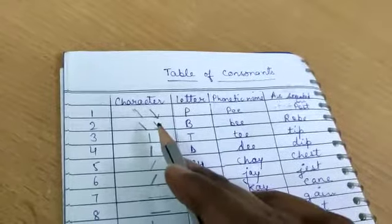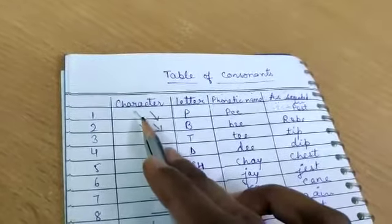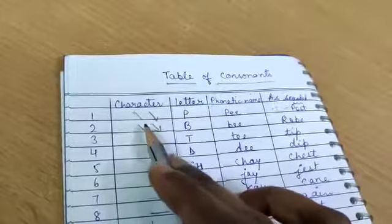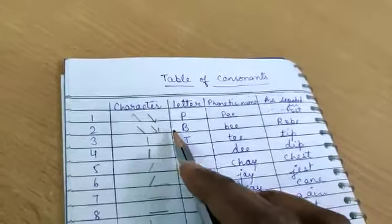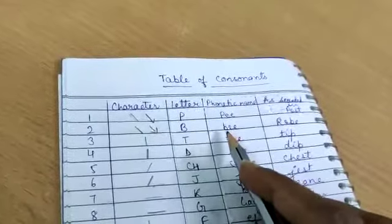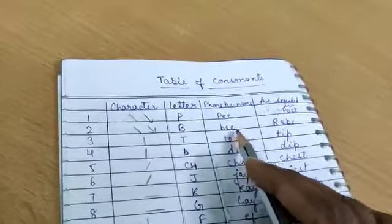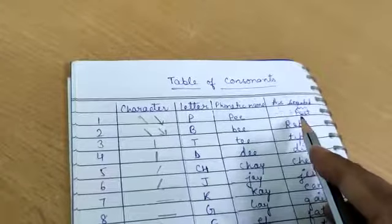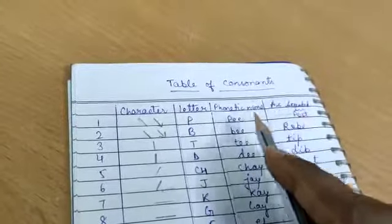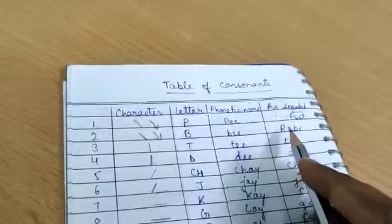Then after comes B. P is lighter than B. B is heavy stroke, then it is dark. And its phonetic name is B. As you can hear in word, robe. Here you post, here you hear P and robe, here you hear B.